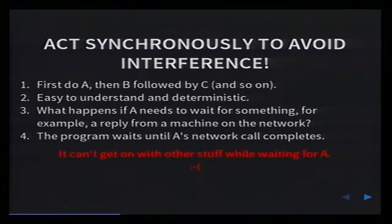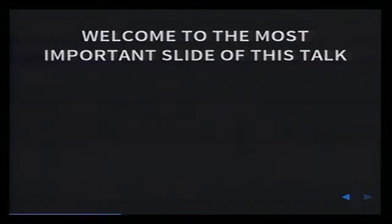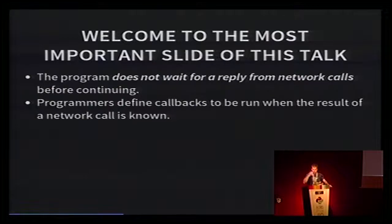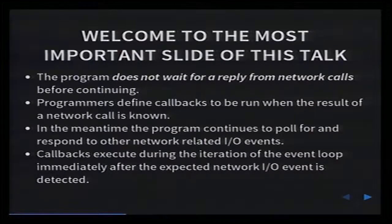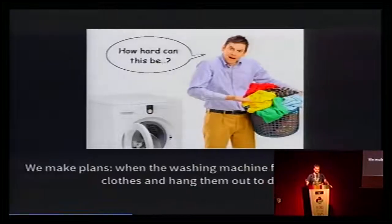Why not just get on with tasks B and C while we wait for the result of A's network call? If you're thinking that, you've described quite succinctly what asyncIO does. AsyncIO is event-driven, meaning that network-based I/O is non-blocking. The program does not wait for a reply from network calls before continuing. Programmers define callbacks to be run when the result of the network call is known. In the meantime, the program continues to poll for and respond to other network-related I/O events. This is actually how we as humans think about concurrency.